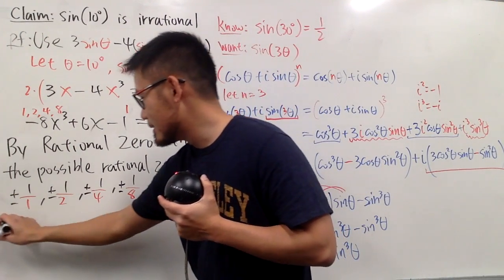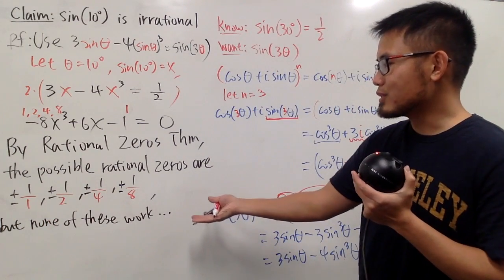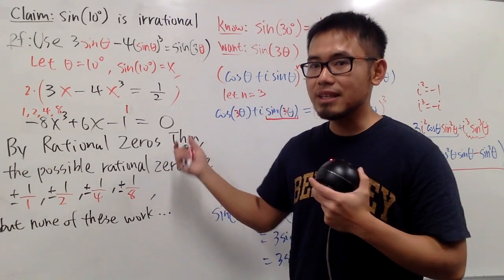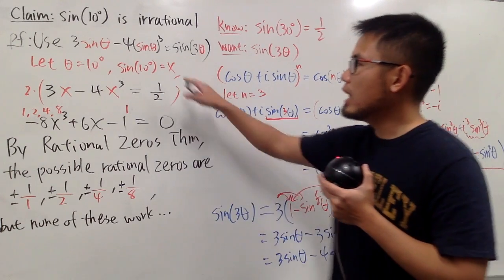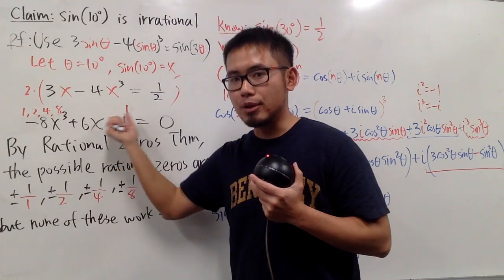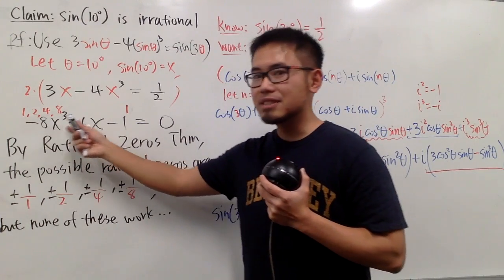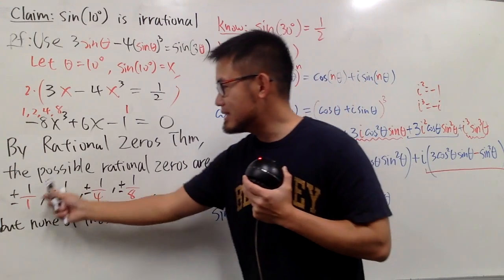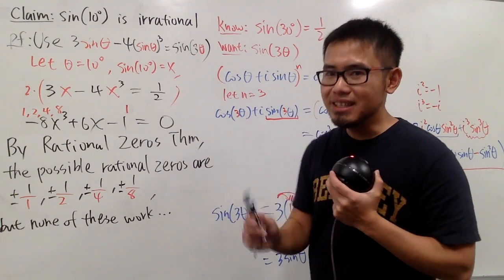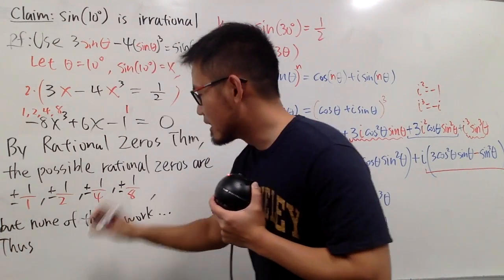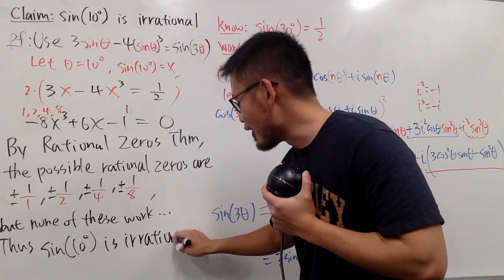However, none of these work. To check, you can plug each of these values into the polynomial and you will see that none of them give zero. Now, x = sine of 10 degrees is supposed to satisfy this polynomial equation — but the Rational Zero Theorem says any rational solution must be among those candidates, and none of them work. Therefore, the final conclusion is that sine of 10 degrees is irrational. We are done!